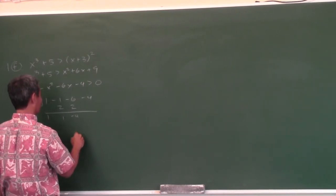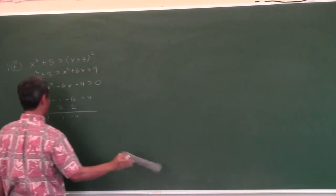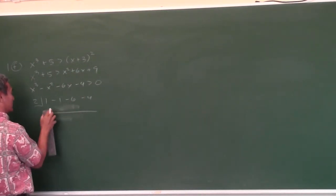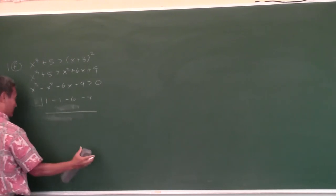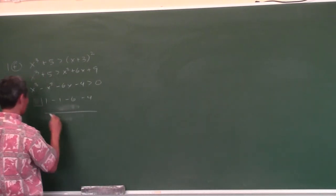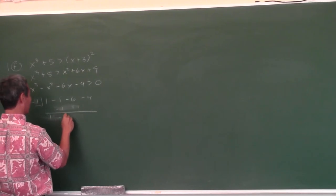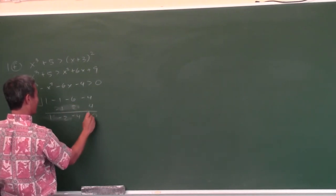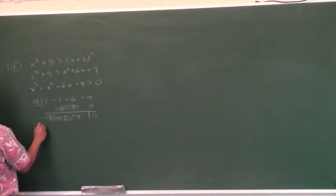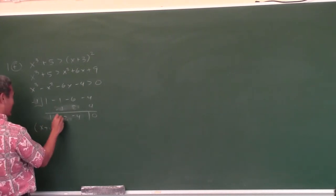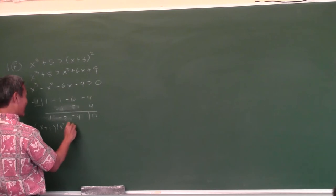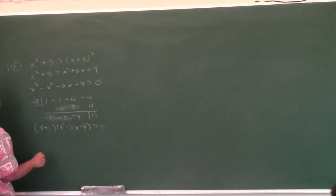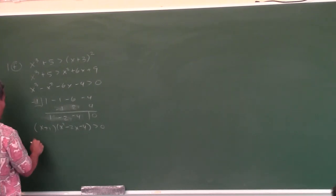2 doesn't work either. Shall we try negative 1? Let's try: 1, negative 1, negative 2, 2, negative 4, 4 — zero. Yeah! So we got (x plus 1), and then x squared minus 2x minus 4 is greater than zero. But that doesn't factor anymore, so we'll go straight to our number line.